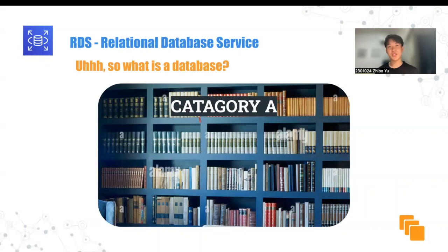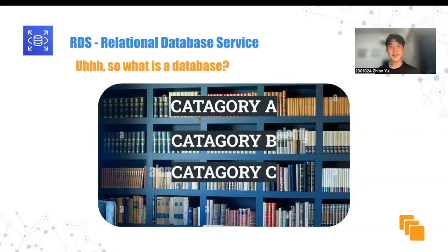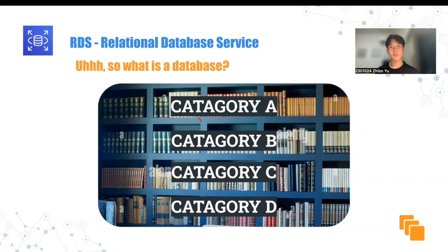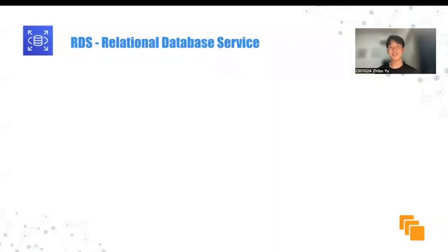Similar to a library which categorizes books by title, author, and genre to facilitate easy access for readers, a database stores data in tables, and each table contains rows and columns. As businesses grow and data complexity becomes greater, a need for a more efficient way to manage data arose, and this gave birth to a relational database, where data is not only structured in tables of rows and columns, but also linked based on their logical relationship.